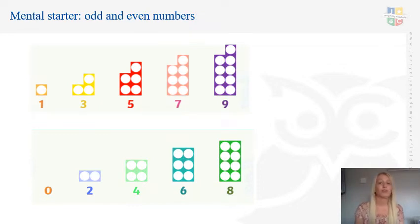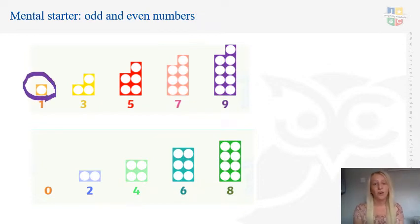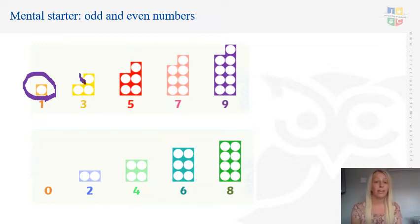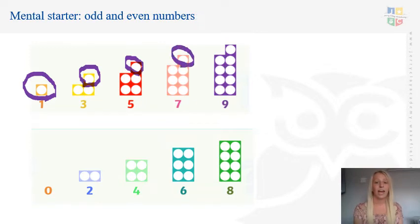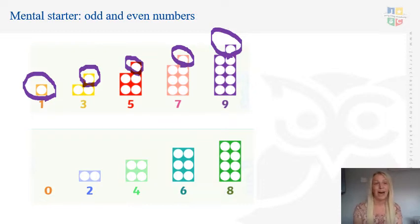An odd number is not a multiple of 2. As you can see on all the numbers here, they are not in a pair — not in a group of 2. Even on number 3, it does have one group of 2, but then it has this one which is not in a group of 2. Same for numbers 5, 7, and 9. This is why all these numbers that are not a multiple of 2 are odd.